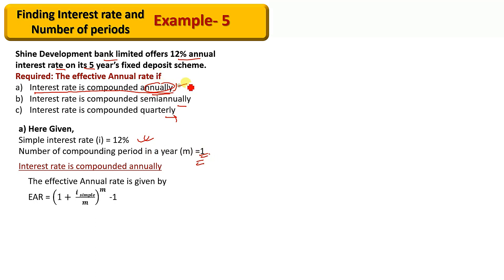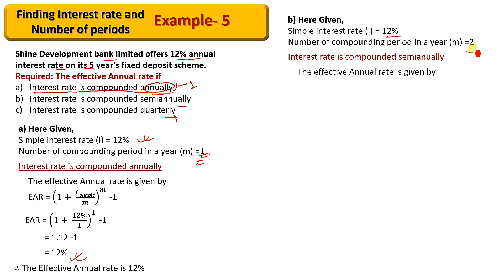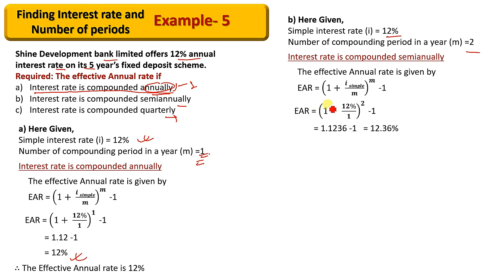For example, with a nominal rate of 12% (0.12) divided by m, compounded semi-annually. EAR is given by the formula: EAR = (1 + i_simple / m)^m − 1, where m is the number of compounding periods. We input i = 12% or 0.12. We have (1 + 0.12/2)^2 − 1, which gives 12.36%.